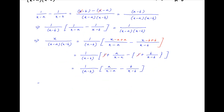Now divide the numerator and denominator of the first term by a, and divide the numerator and denominator of the second term by b. We get 1 upon (a minus b) times the quantity [1 upon (x/a minus 1) minus 1 upon (x/b minus 1)].